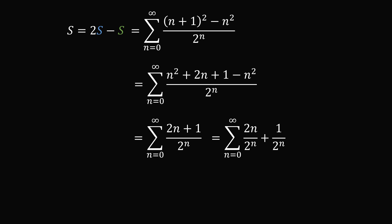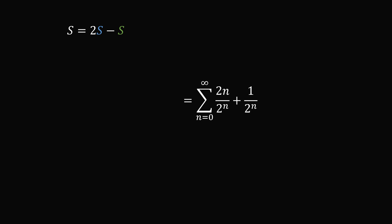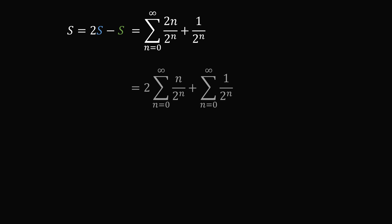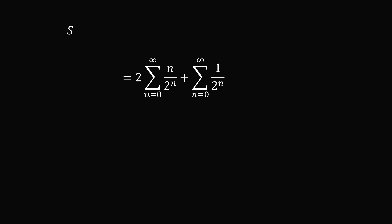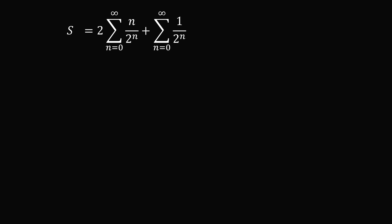We split this into two different summations: 2 times the sum from n equals 0 to infinity of n over 2 to the n, plus the sum of 1 over 2 to the n from n equals 0 to infinity. The second summation is easy to recognize — it's a geometric series with a common ratio of 1/2 and a first term of 1, so it equals 1 divided by (1 minus 1/2), which equals 2.